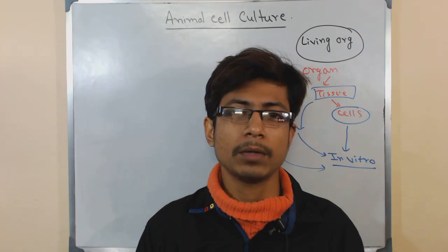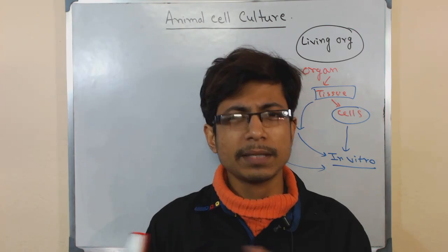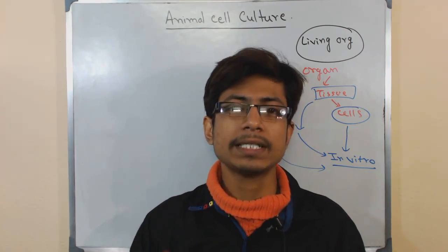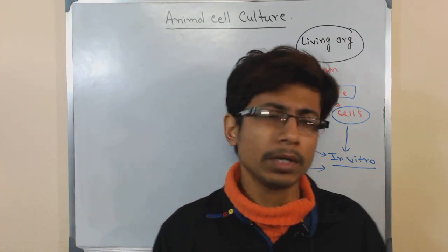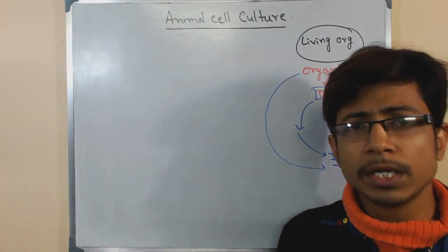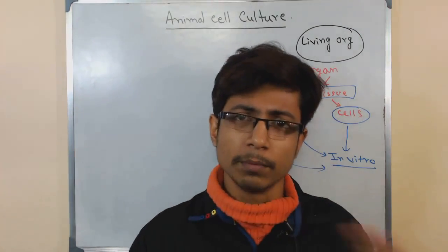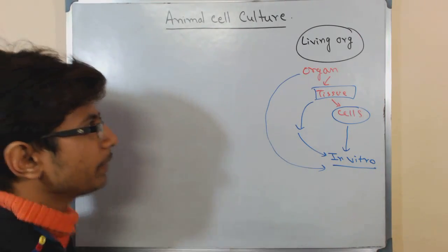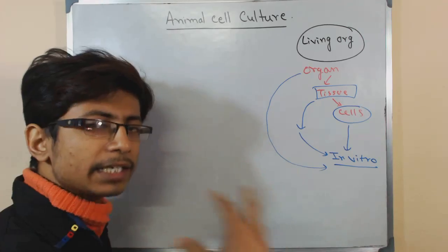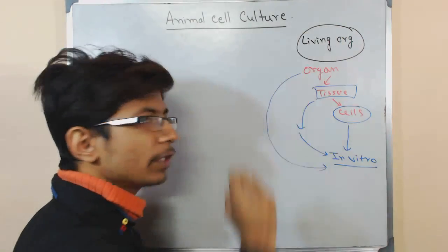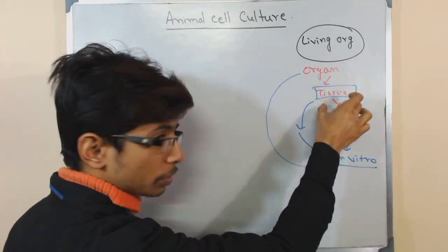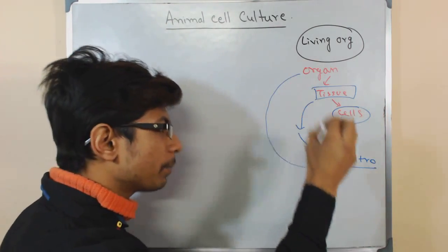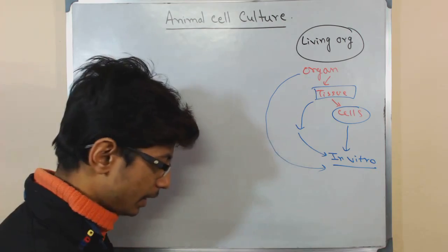In this video, we will be talking about some more terminologies and why we are doing cell culture, the advantages and disadvantages. We will cover different terminologies — cell culture means everything: cell, tissue, or organ present in a living organism. If you look at the hierarchy, organ breaks down into tissue, tissue breaks down into cells, and we can put them in vitro in artificial media.